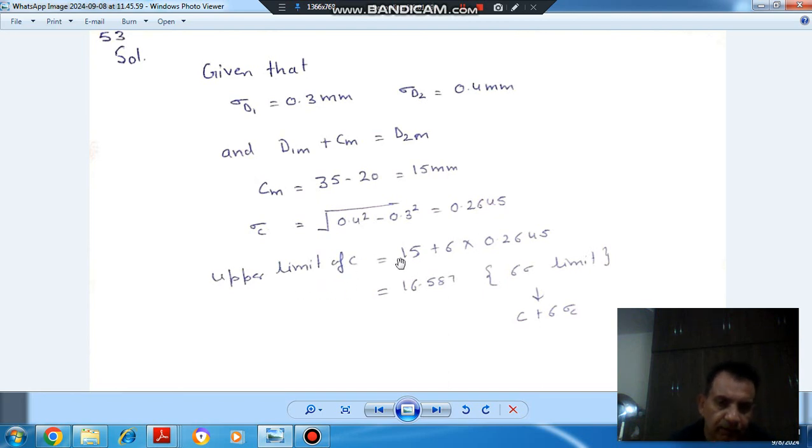So upper limit of C will be mean dimension plus 6 sigma. 15 plus 6 into sigma C, so that will be 16.58. So that is the formula used: C plus 6 sigma C, because we have to find out 6 sigma limit. So this is C plus 6 sigma C.